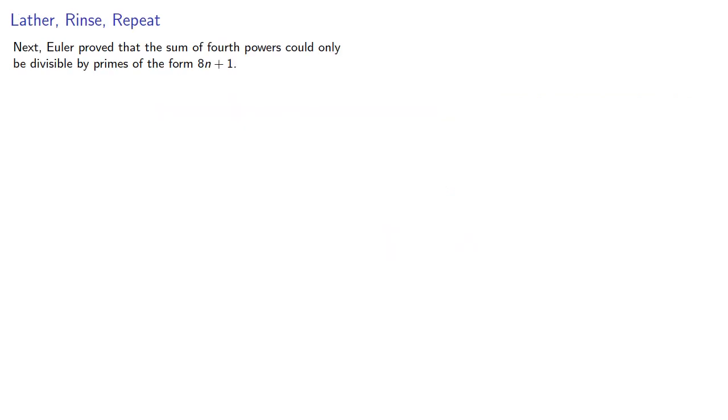Next, Euler proved that the sum of fourth powers could only be divisible by primes of the form 8n plus 1. Since a to the fourth plus b to the fourth is also the sum of squares, we know that its only prime factors are of the form 4k plus 1, or maybe 2. But these numbers are either 8n plus 1, or 8n minus 3 numbers.